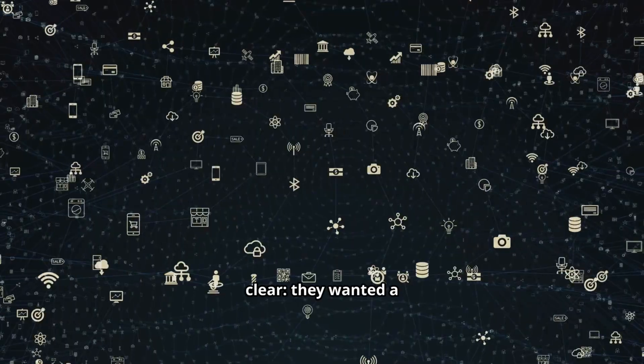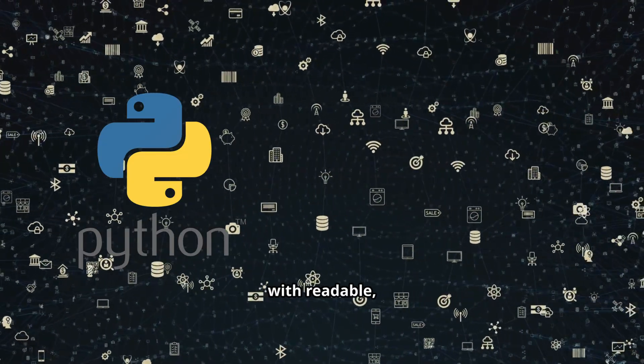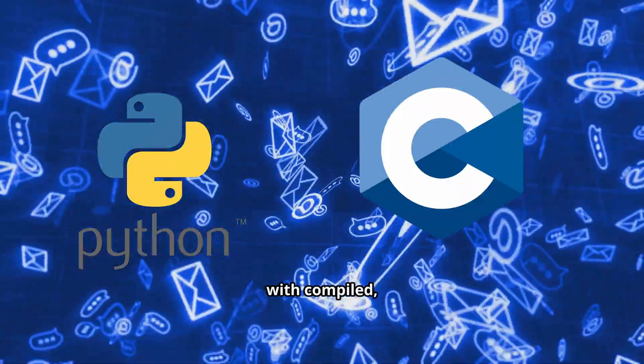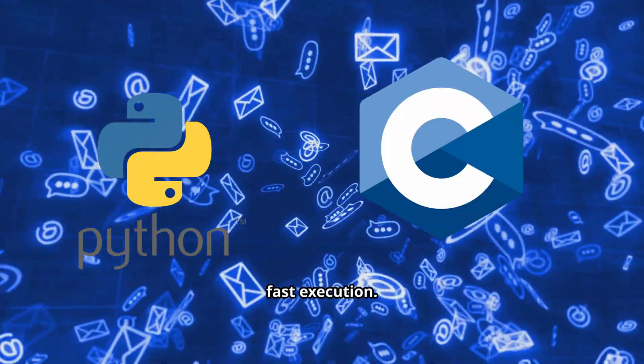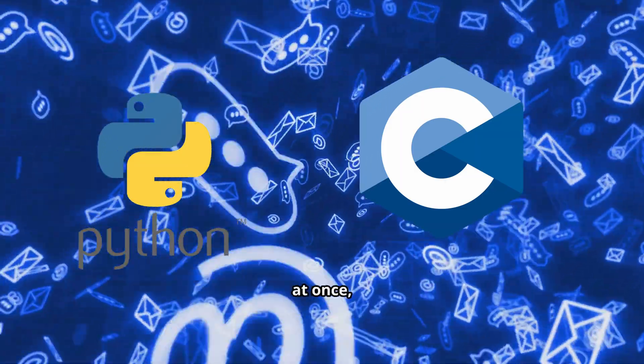Their goals were clear. They wanted a language that was simple like Python, with readable, clean syntax; performant like C, with compiled, fast execution; and concurrent by design, able to handle thousands of tasks at once, a necessity for web-scale systems.